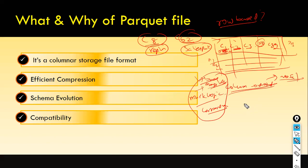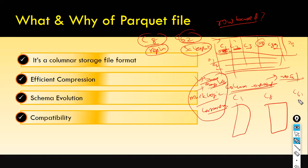In column-oriented storage, each column is stored separately — instead of storing all columns in a single table, each column's values are stored separately. So when your query selects region and sales amount, it goes directly to that specific column and fetches the value. Hence the performance is pretty faster compared to a row-based database.